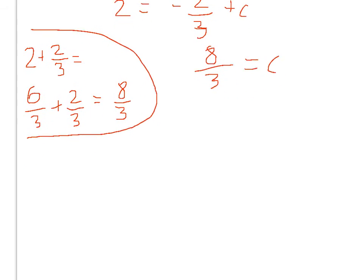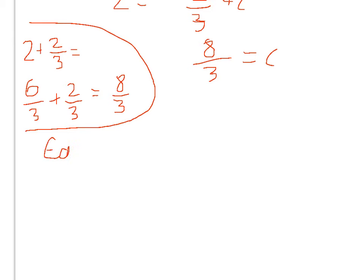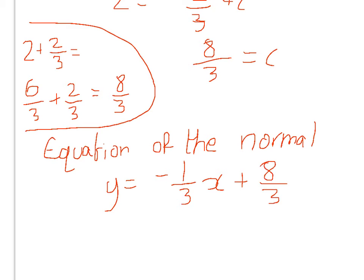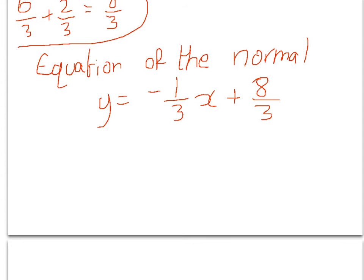So our equation of the normal: y equals minus 1 third x plus 8 over 3. Now it might make sense here, because they're both thirds, to multiply through by 3 so we've not got any fractions. If we do that, we end up with 3y equals minus x plus 8, which if we move everything to the left-hand side gives 3y plus x minus 8 equals 0. So that's the equation of the normal, and there's several different ways the answer could be written.